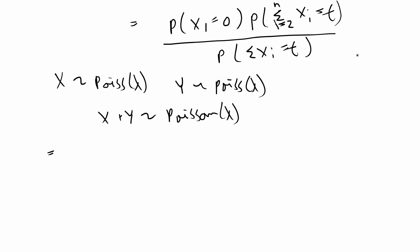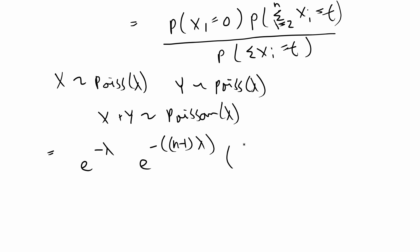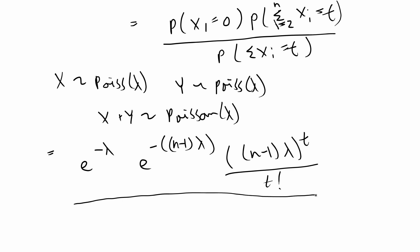For the first probability, P(x1=0) equals e to the negative lambda. For the numerator's sum from i=2 to n, that's n-1 values, so we plug in (n-1)lambda as the distribution parameter: e to the negative (n-1)lambda times ((n-1)lambda)^t over t factorial. The denominator uses all n values, distributed n*lambda, giving e to the negative n*lambda times (n*lambda)^t over t factorial.